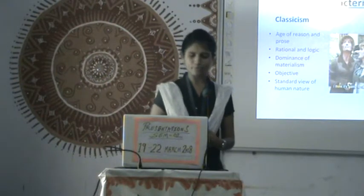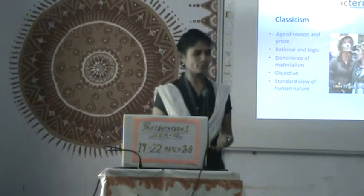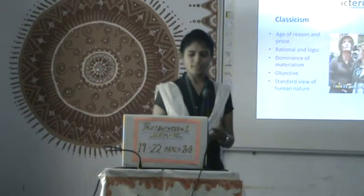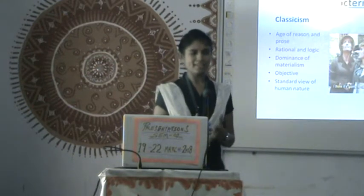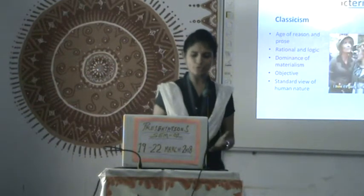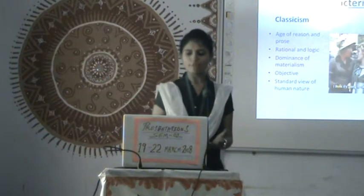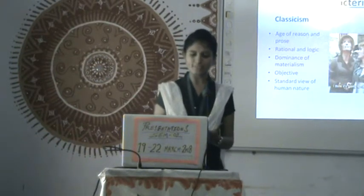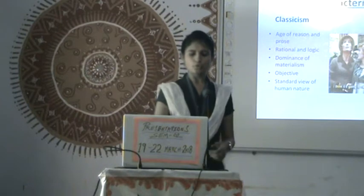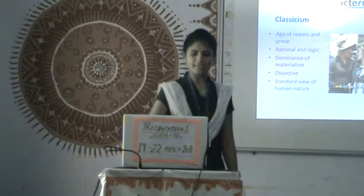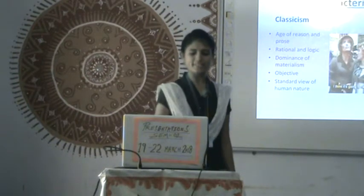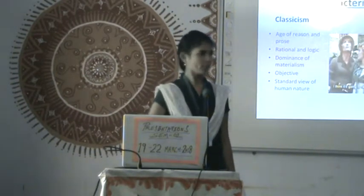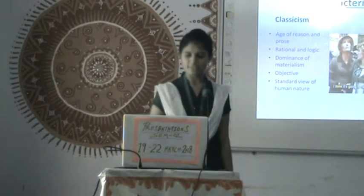First let us discuss the characteristics of classicism and romanticism. Classicism is the age of reason and prose, whereas romanticism is the age of poetry. The qualities of rational thinking, logic, and dominance of materialism can be found in Eleanor.